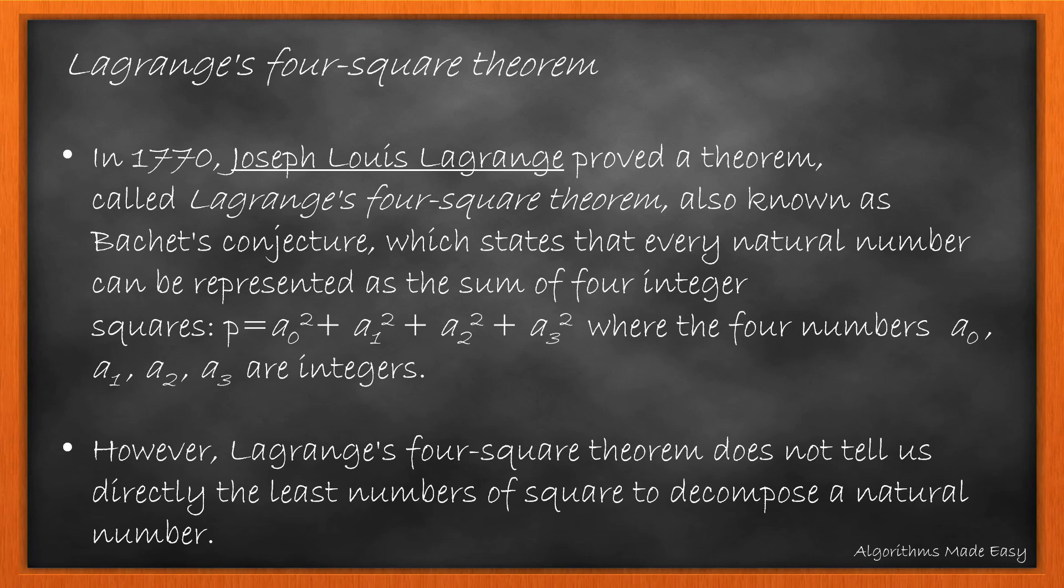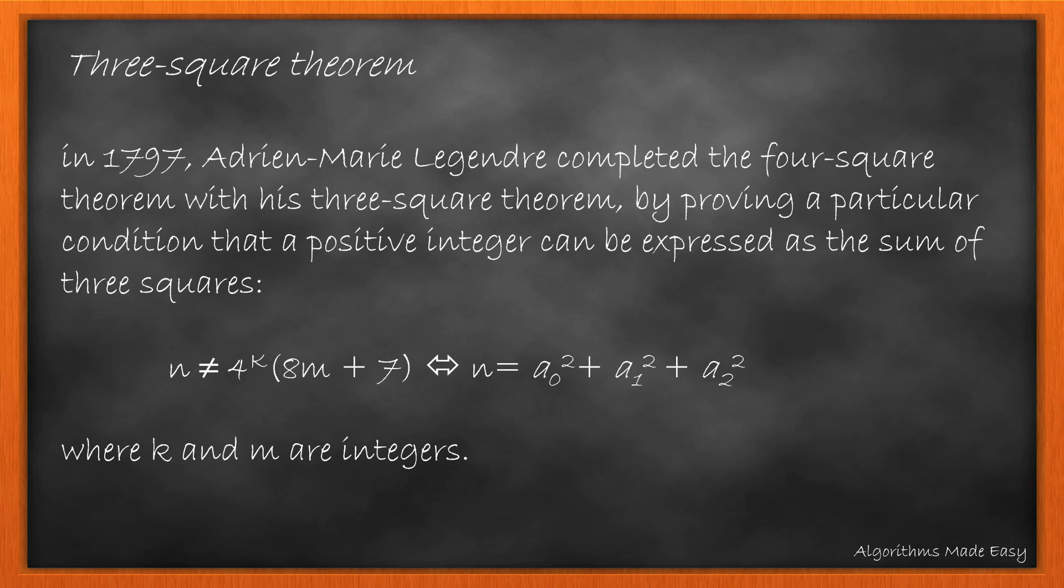To get away with the least number issue we will use 3-square theorem. It states that a number which is not of the following form can be expressed as sum of 3 squares.